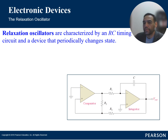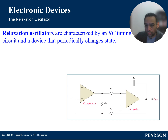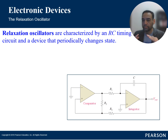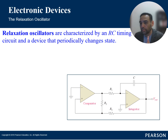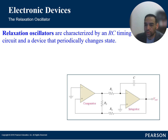Relaxation oscillators generate non-sinusoidal waveforms — typically square waves, triangle waves, or sawtooth waves. The triangle wave has equal rise and fall rates; the sawtooth has different rates for rise and fall. Unlike resonant-circuit oscillators, relaxation oscillators use the principle of the charging and discharging of capacitors to produce oscillations in a non-linear manner.